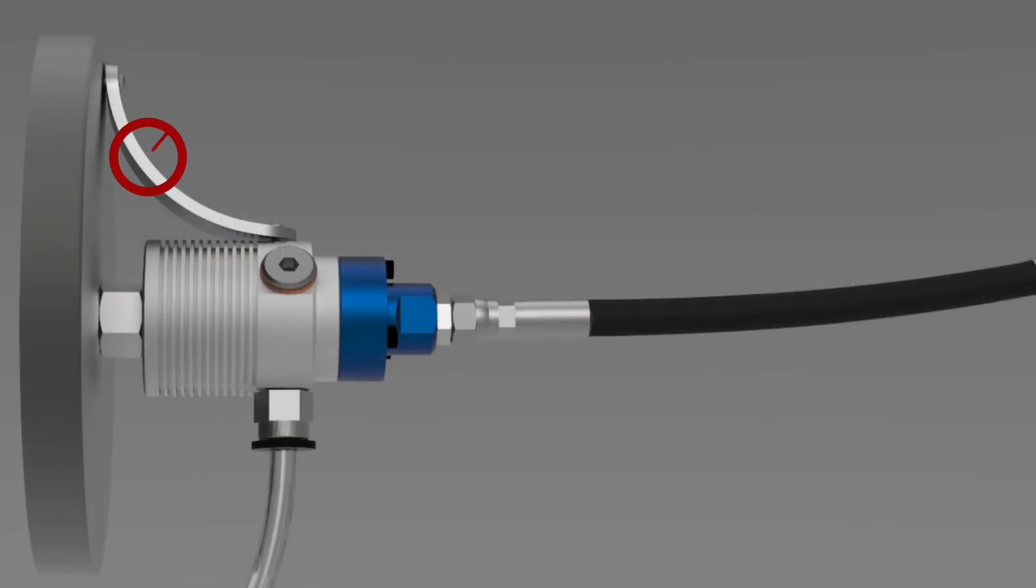Mechanical restraints of any kind also create side loads on the union and are not recommended. Avoiding side loads from hoses or mechanical restraints will prolong the life of the union's bearings and seals.